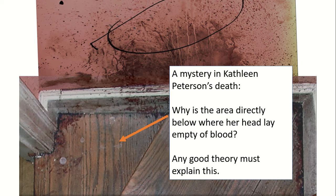Not impossible, of course - you might want to say that Michael cleaned up this area, or perhaps he moved the body and made it look as though it was a fall down the stairs when in fact her body was lying somewhere else, something along those lines. But even if you think that something like this is the case, this still seems to be a pretty clear shadow - or a lack of blood - where we would expect to find quite a bit, given just the sheer extent of the blood surrounding the area. So any good theory of what happened to Kathleen Peterson needs to explain this lack of blood in this area.